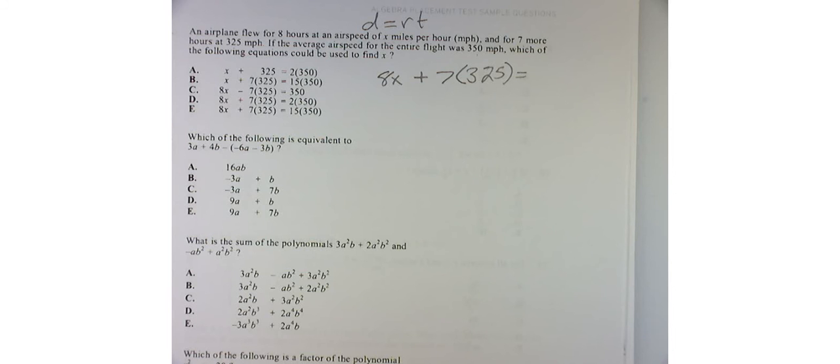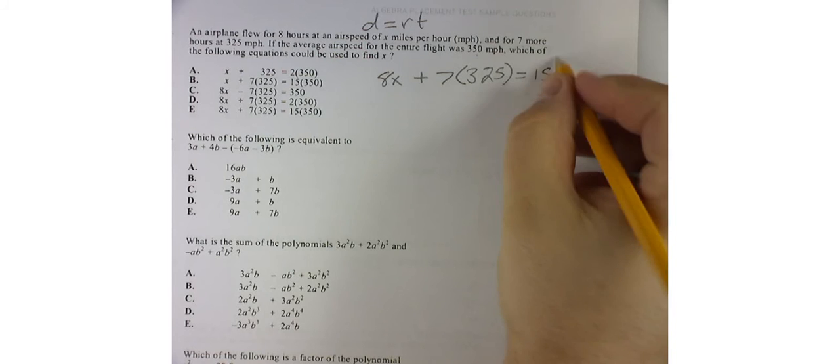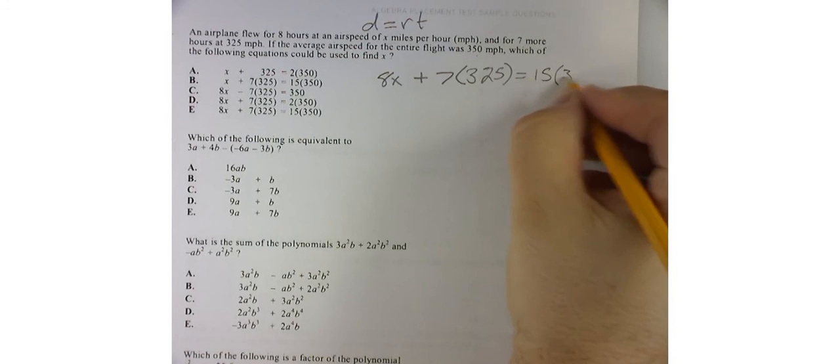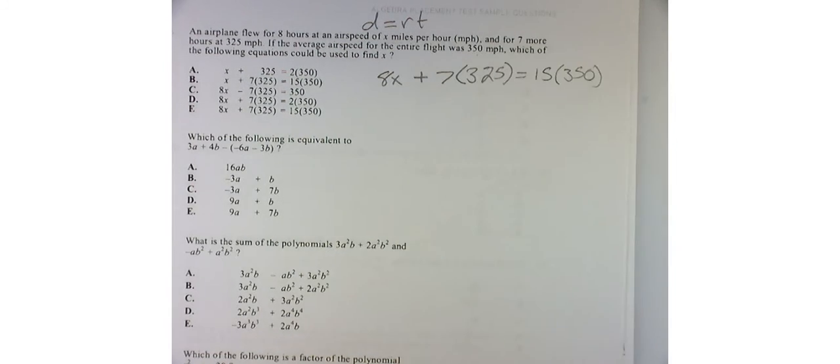But how long were they in flight? 15 hours. So the distance here should be 15 times 350, and that's pretty much it.